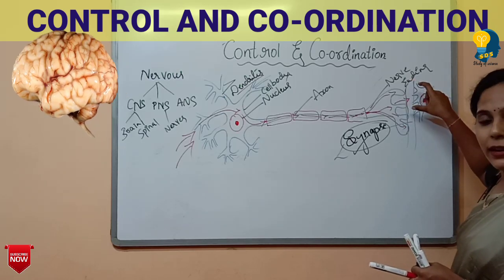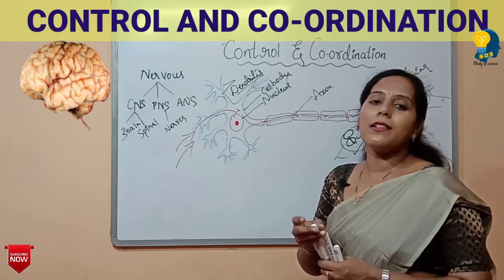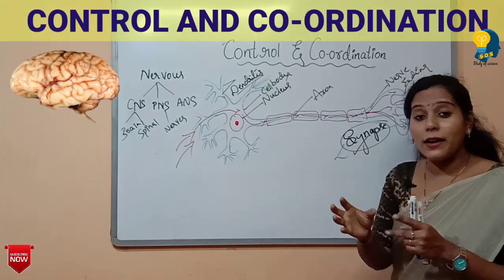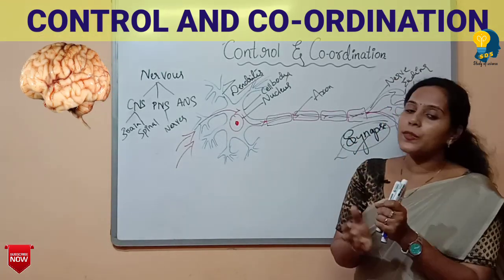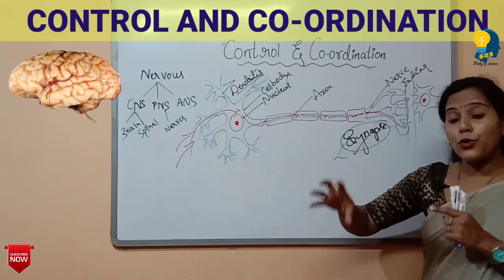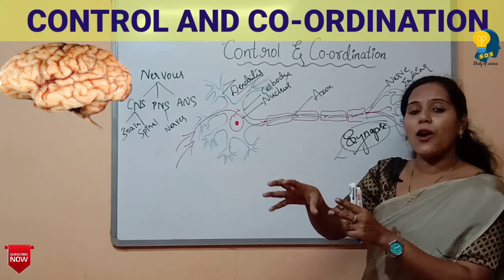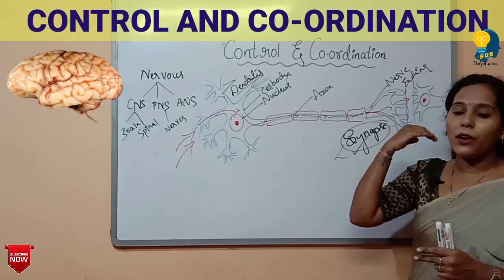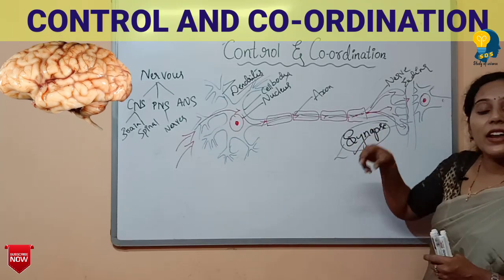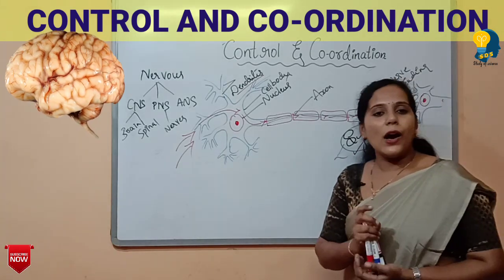From the next neuron's dendrites, the chemicals are received and set off again as electrical impulses. The message travels as electrical impulses because, as I mentioned, when we are in danger we perform activities within fractions of seconds. The messages must travel quickly from the sensory organs to the spinal cord, and this is why it travels as electrical impulses.